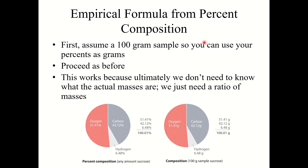Now let's talk about empirical formula from percent composition. If you're given percent compositions and asked to find the empirical formula, first assume a 100 gram sample. This lets you convert your percents directly to grams. For example, if a sample is 51.41% oxygen, 42.12% carbon, and 6.48% hydrogen, assuming 100 grams means you have 51.41 g oxygen, 42.12 g carbon, and 6.48 g hydrogen. Then proceed as before: convert those grams to moles using molar masses, write your subscripts, and divide by the smallest number — because you only need a ratio of masses.